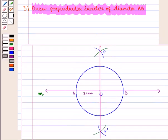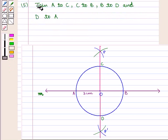Now we see that the perpendicular bisector intersects the circle at point C and point D. Now we join A to C, C to B, B to D, and D to A.